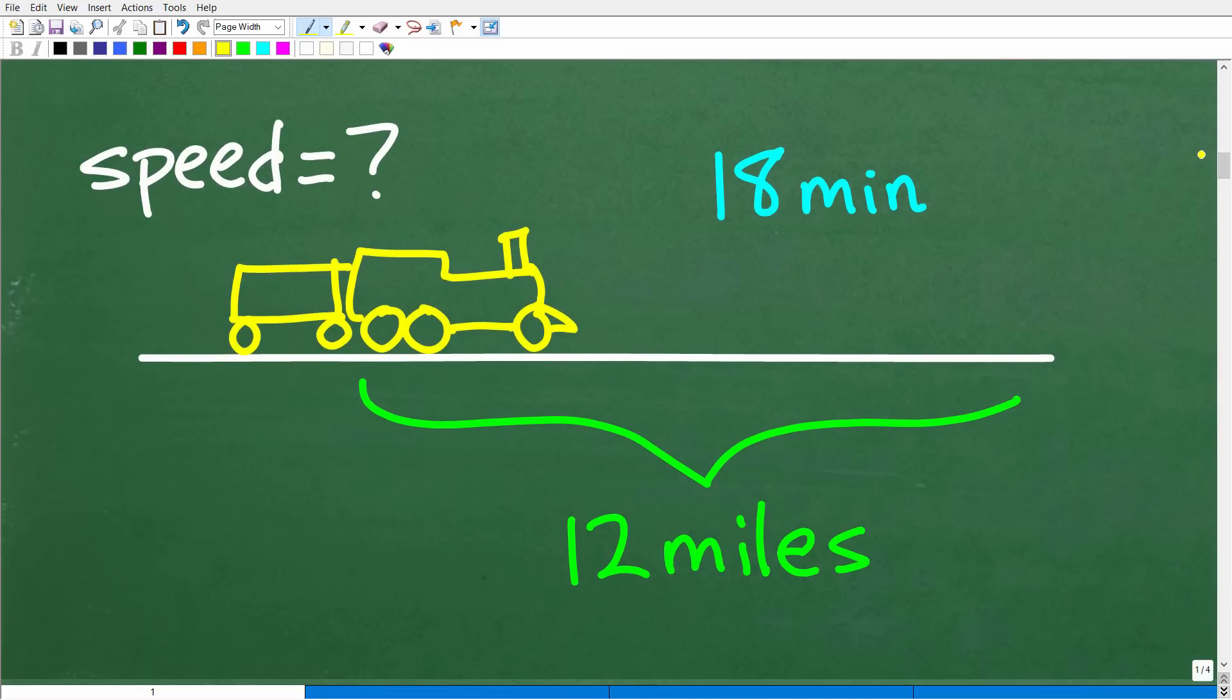Now, a good idea to solve any problem is just to kind of model the situation. Oftentimes, visualizing the problem can help you see the solution. So let's go ahead and take a look at a little sketch of the problem. So this gives us a chance to use our basic art skills as well. So here is our train. It goes 12 miles in 18 minutes. And the question is, how fast is it going, i.e., what is the speed of the train?